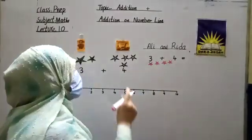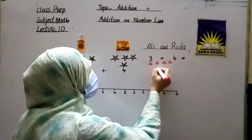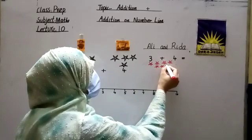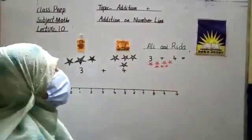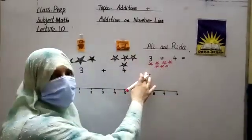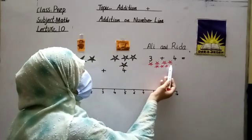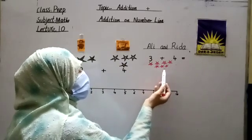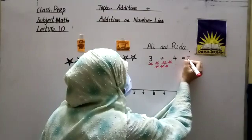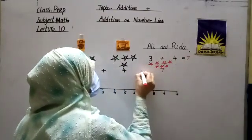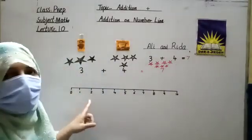Now we make all the stars together and count them: 1, 2, 3, 4, 5, 6, and 7. I make 3 stars for Ali and 4 stars for Rida. Now we count them all together — there are 7 stars. Rida and Ali have 7 stars altogether. The answer is 7.